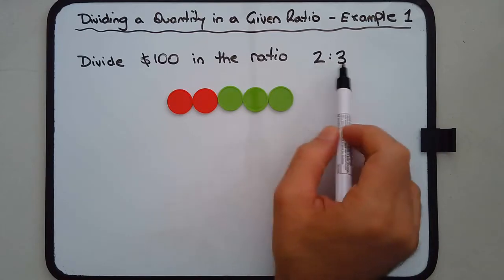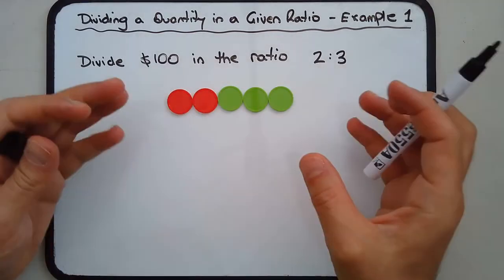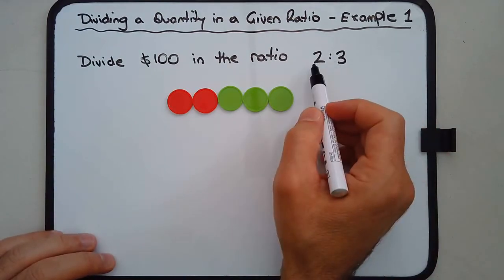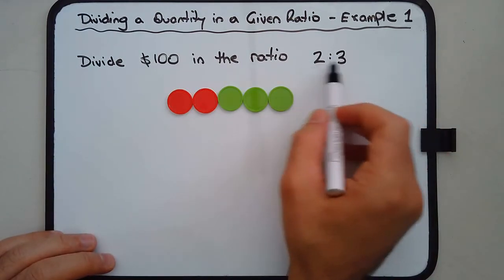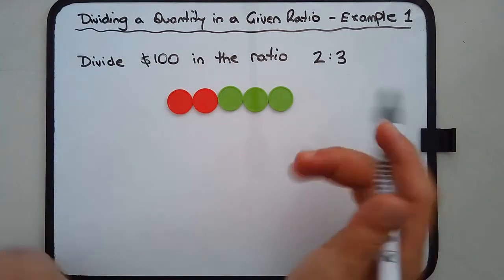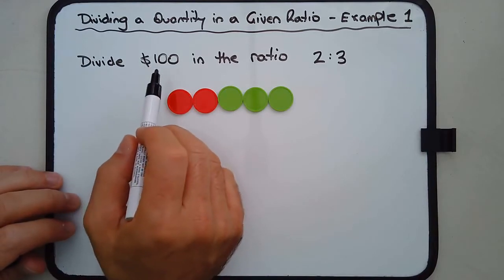So what this means is that we're going to divide this $100 into two groups. Obviously one group is going to be slightly bigger than the other, and it's going to be in that order. So group one is going to be a little bit smaller than group two.